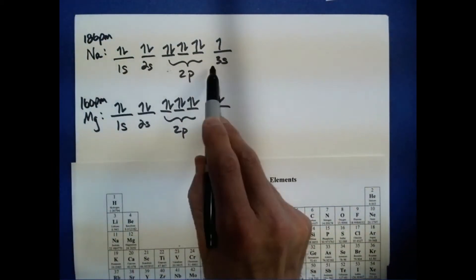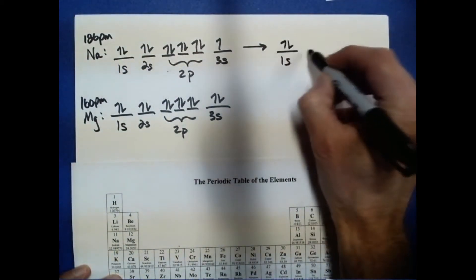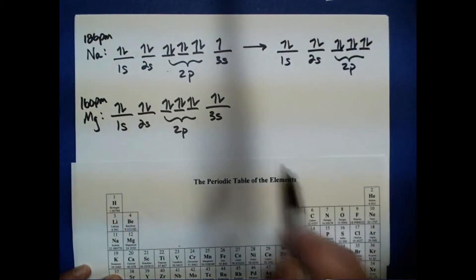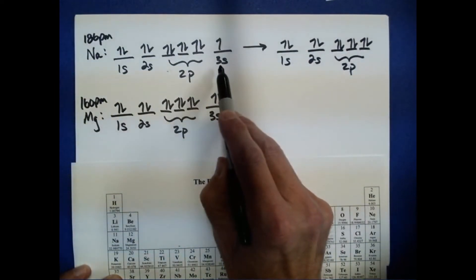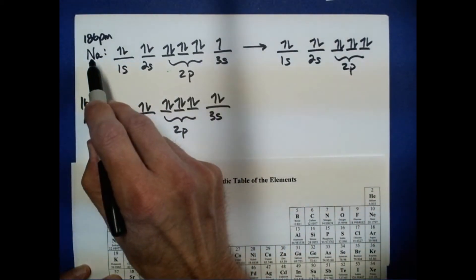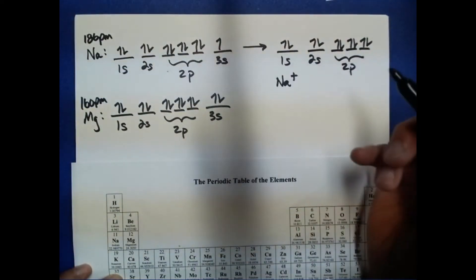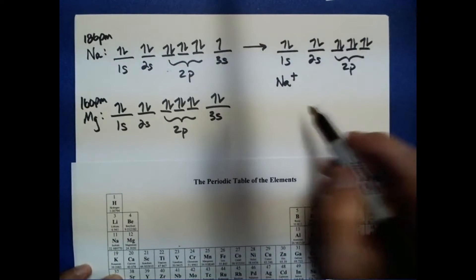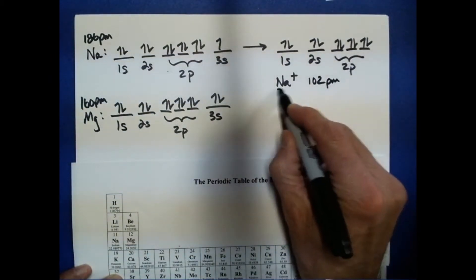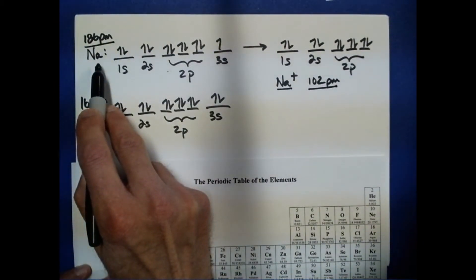If we want to make the sodium ion, we remove one electron — the 3s electron. By removing that one electron, we get an electronic configuration in which only the second shell is full. We remove this full outer third-shell electron, causing a contraction in size going from the atom to the cation. The sodium cation is only 102 picometers, compared to almost twice that for the sodium atom.